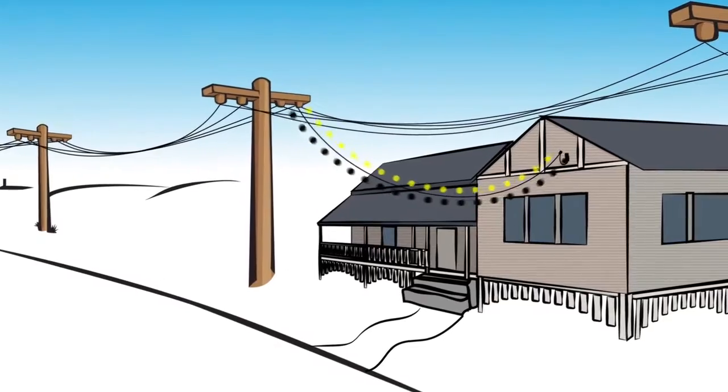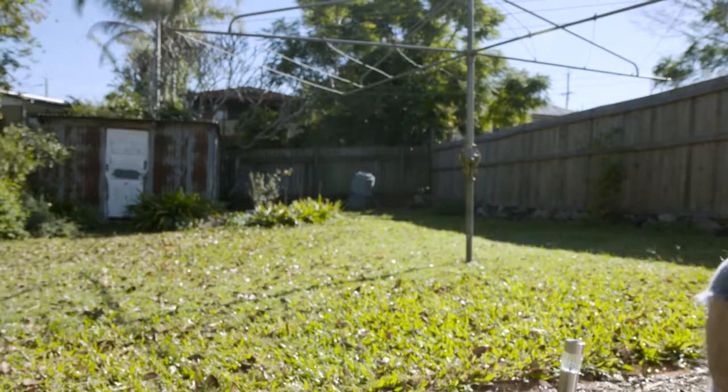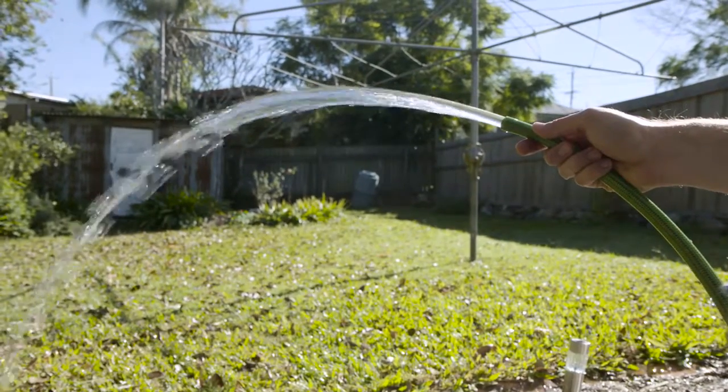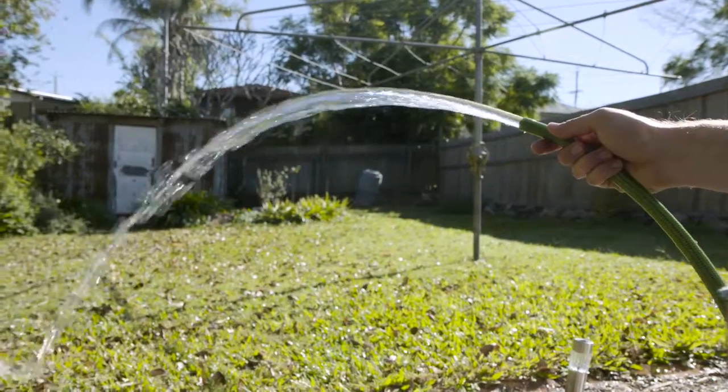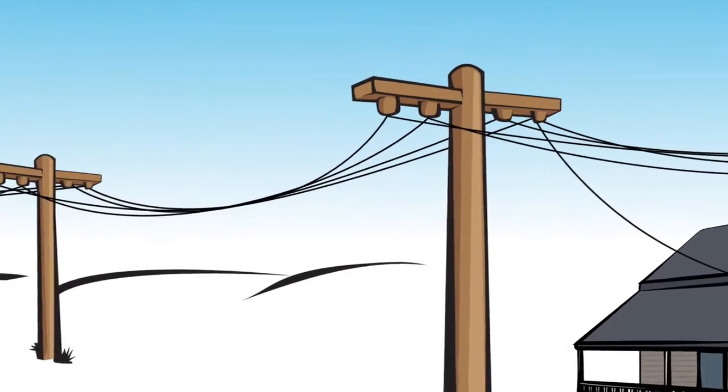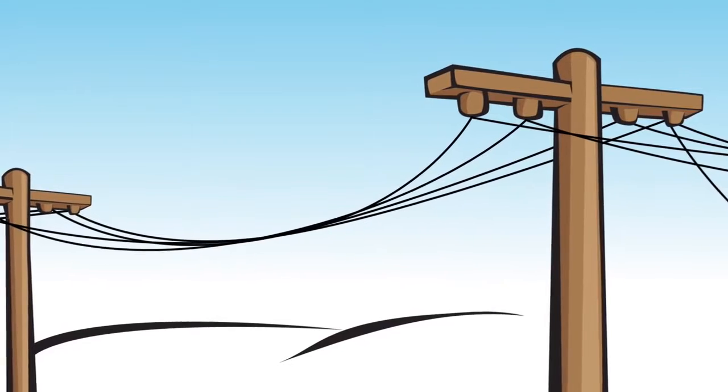Electricity is the flow of electrons through a conductor like water through a hose. Unlike water which is measured in litres, electricity has electron flow or current which is measured in amps.